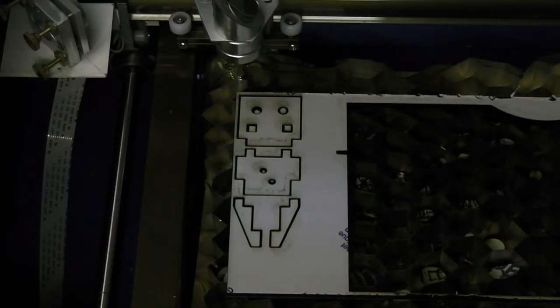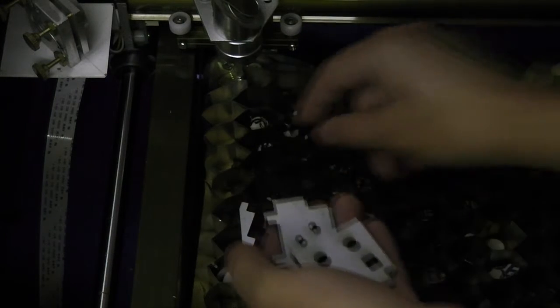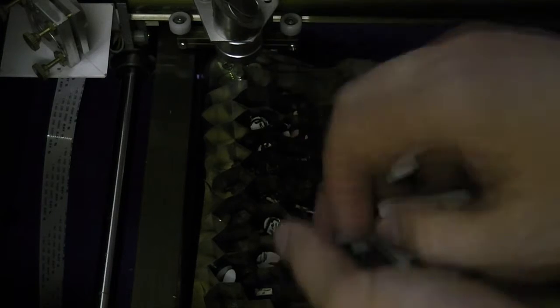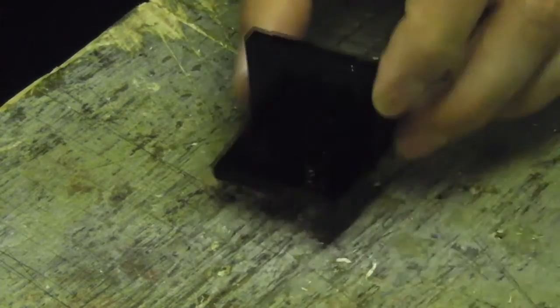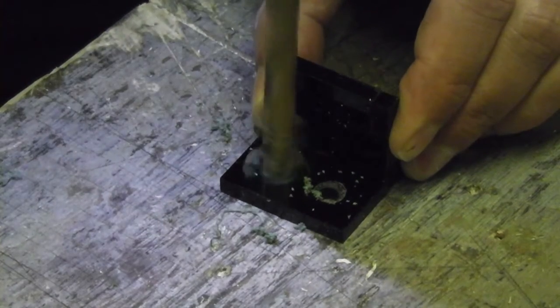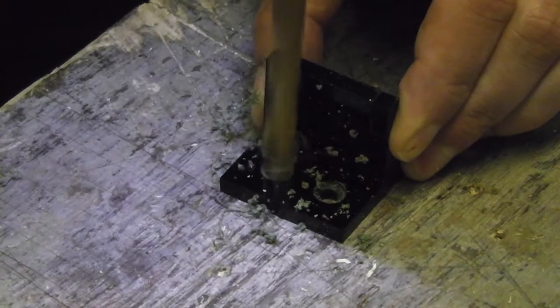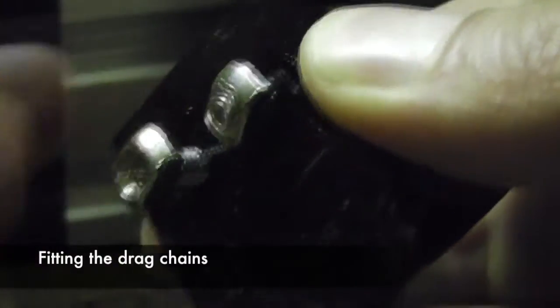This is the first clamp for the Y axis drag chain. This will carry the end of the drag chain through which all the wires enter the machine. And it's going to hang down from the side of the Y axis C beam. I glued it together with my usual solvent cement and I'm just going to countersink the bolt holes so that the end of the bolts don't get in the way of the chain or interfere with any of the wiring. I used drop-in T nuts and M4 bolts to attach the clamp to the base of the Y axis C beam to the right side of the machine.